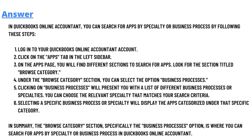On the app page you will find different sections to search for apps. Look for the section titled browse category. Under the browse category section you can select the option business process. Clicking on business process will present you a list of different processes or specialities. You can choose the relevant speciality that matches your search criteria.